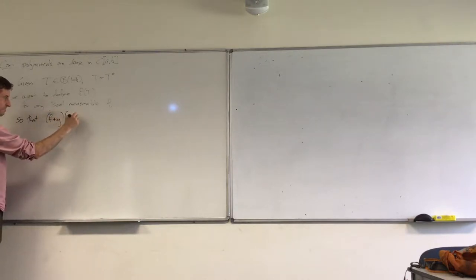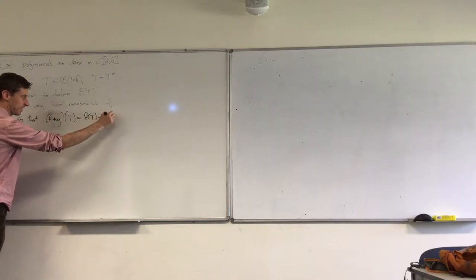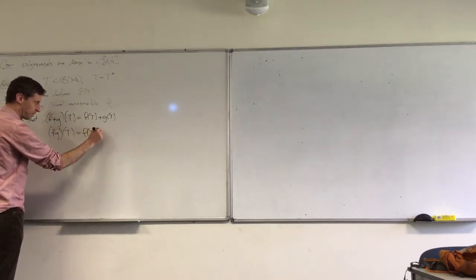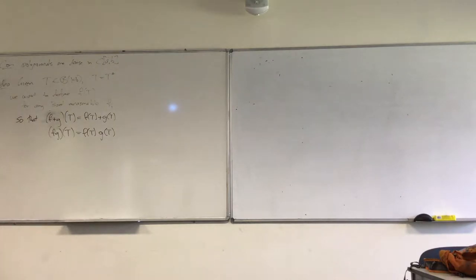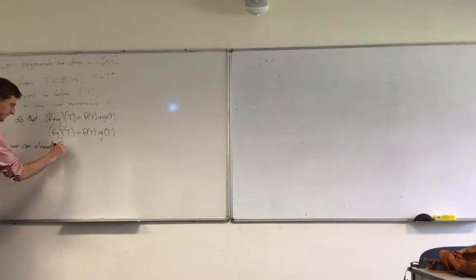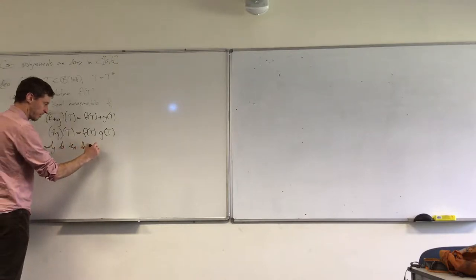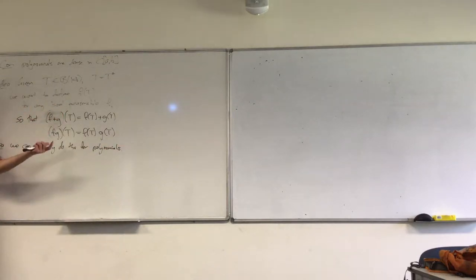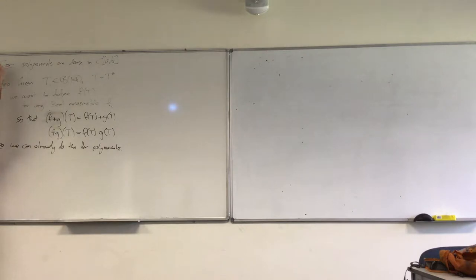The sum of two functions applied to our operator should give us the sum of the operators, but we also want this to hold for multiplication — where this is pointwise product of functions and this is composition of linear operators. We could already do this for polynomials; it's obvious how to take a polynomial of an operator — you just compose the operator the appropriate number of times. And this corollary is going to give us a way of doing it in general.